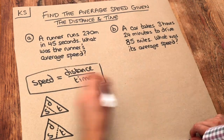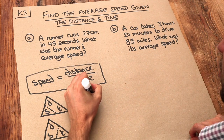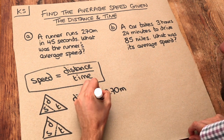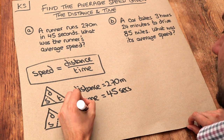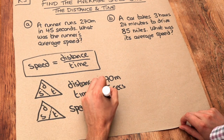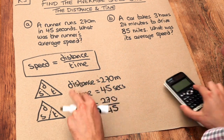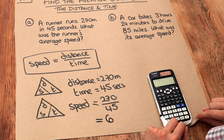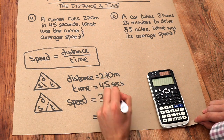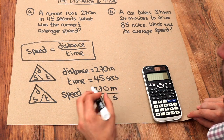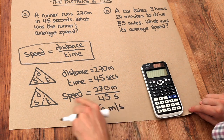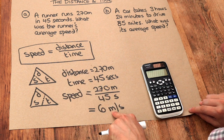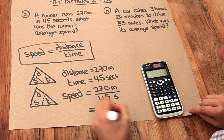Let's use it for the values here. The distance is 270 meters and the time is 45 seconds. So the speed is going to be 270 divided by 45, and if we do that on a calculator we get 6. The unit is meters per second because we did meters over seconds — that slash means 'per'. So on average the runner travels 6 meters per second.